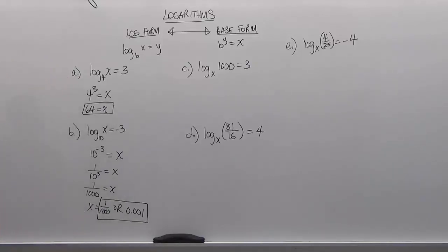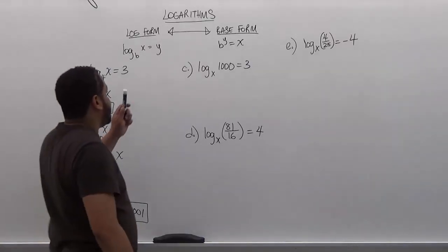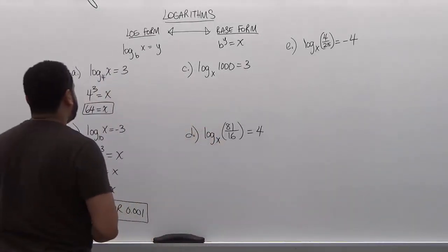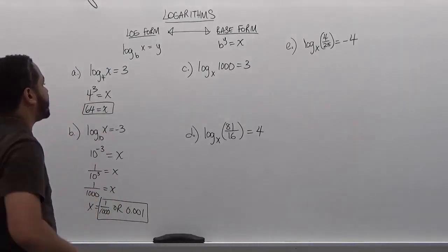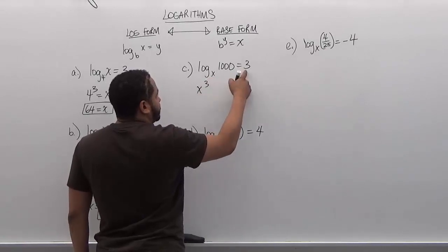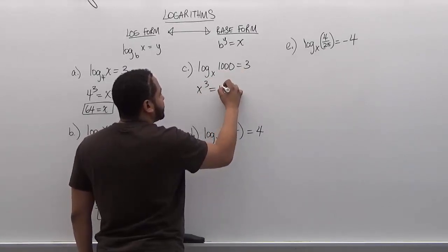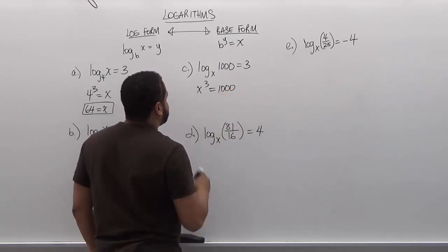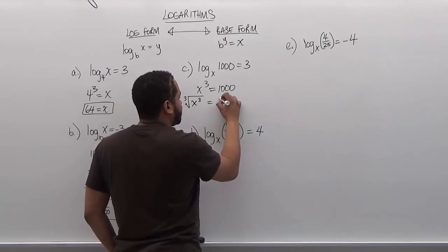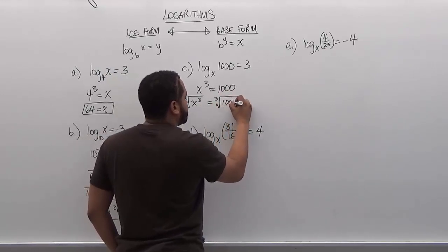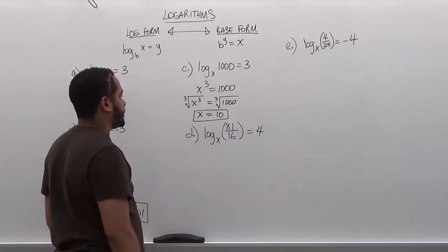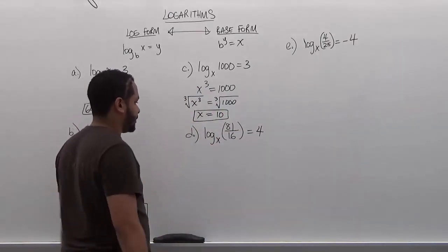The third problem is log base x of 1000 is equivalent to 3. Unlike the other two problems, our base term is x. So we put x to the third power and set it equal to 1000. To solve this we take the cubic root of both sides — the cubic root of x cubed gives x, and the cubic root of 1000 is 10, because 10 times 10 times 10 is 1000. So x equals 10.